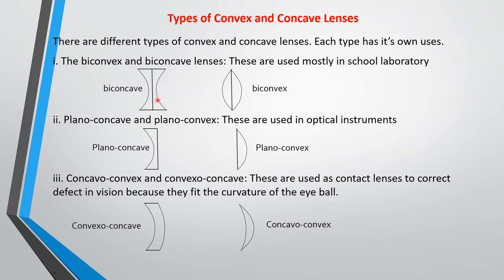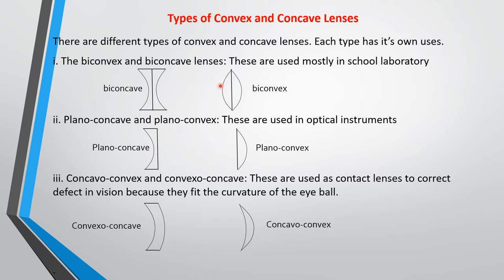Under these two types of lenses there are other types depending on the use. For convex lenses there are sub-types, and similarly for concave lenses. The first ones are the biconvex and biconcave lenses. Looking at them, the center is divided and it's as if two lenses are brought together. The biconcave and biconvex lenses are used mostly in your laboratory.